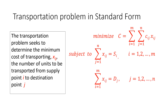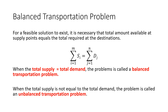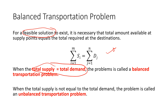The minimization is subject to the supply constraints and the demand constraints. There is also a non-negativity condition, which means that the number of units shipped on each route cannot be less than zero. A special type of transportation problem is known as the balanced transportation problem. For a feasible solution to exist, the total supply must equal the total demand. When this condition holds, the problem is called a balanced transportation problem.